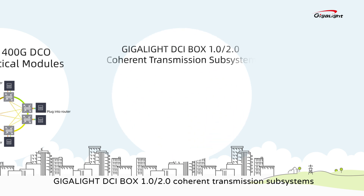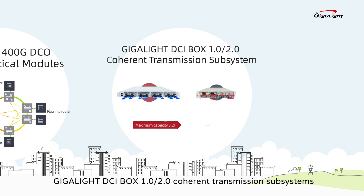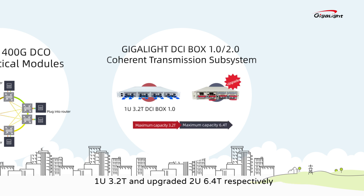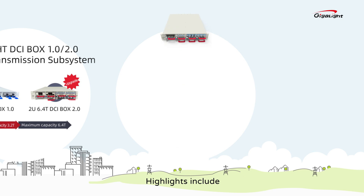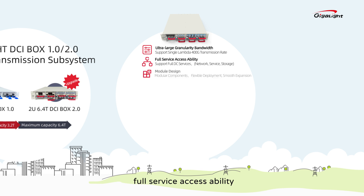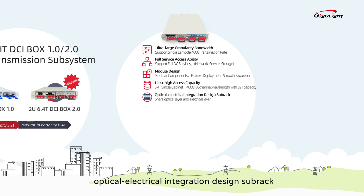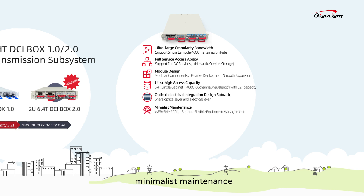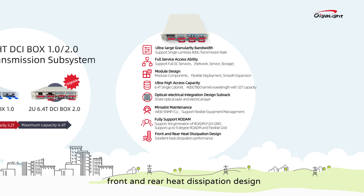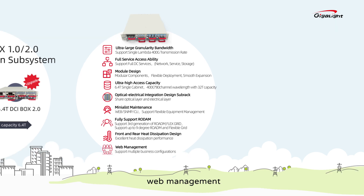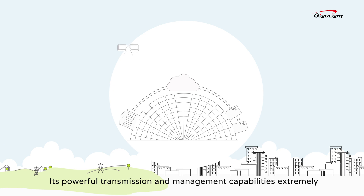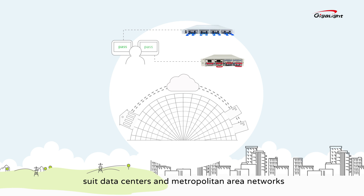Gigalight DCI Box 1.0/2.0 coherent transmission subsystems based on data center interconnection are 1U 3.2T and upgraded 2U 6.4T respectively. Highlights include ultra large granularity bandwidth, full service accessibility, module design, ultra high access capacity, optical-electrical integration design sub-rack, minimalist maintenance, full support for ROADM, front and rear heat dissipation design, and web management. Its powerful transmission and management capabilities extremely suit data centers and metropolitan area networks.